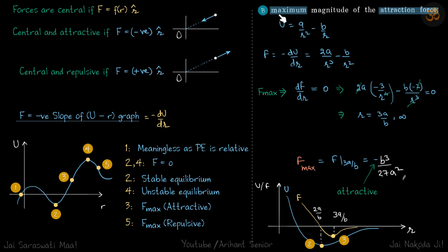Let's get our second part now, where we need to find the maximum magnitude of this attractive force. U is given as A by R squared minus B by R.